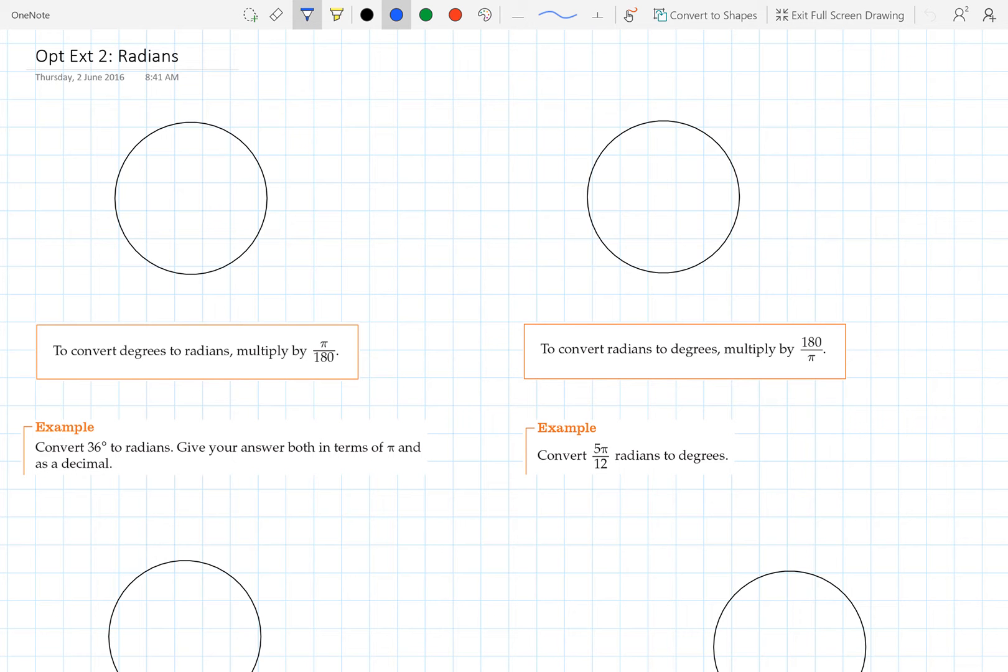Hi everyone, in this video we're talking about radians. Radians is a different way to measure degrees or measure an angle.